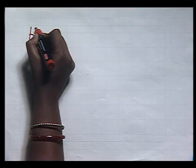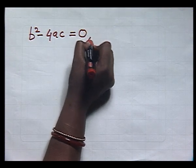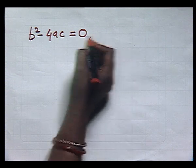So, if B squared minus 4AC is greater than or equal to 0, then the quadratic equation Ax squared plus Bx plus C equal to 0 has real roots alpha and beta, given by alpha equal to minus B plus under root of B squared minus 4AC upon 2A, and beta equal to minus B minus under root of B squared minus 4AC upon 2A. But let us see what happens when B squared minus 4AC is equal to 0.